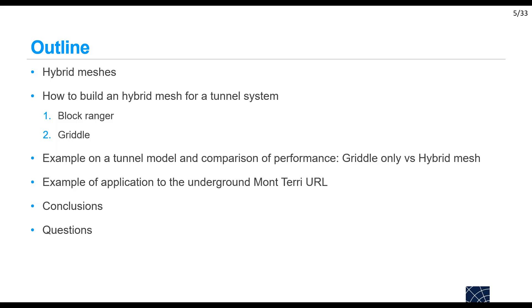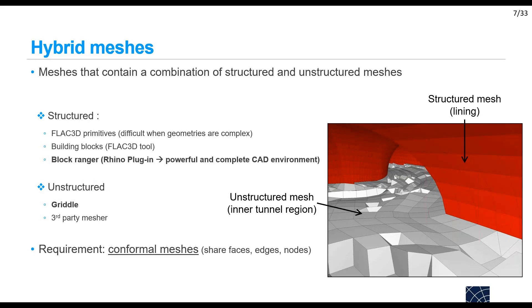I will end with an example of application to the underground research laboratory of Monterey in Switzerland. Hybrid meshes are meshes that contain a combination of structured and unstructured meshes. In this example, the structured mesh is used for creating the lining and the unstructured mesh for creating the inner region of the tunnel.